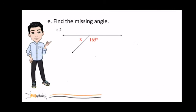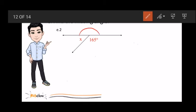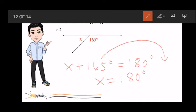So, in this problem, we need to find the missing angle x. Here, we can assume that this is a straight angle. And a straight angle has 180 degrees. And we all know that these two adjacent angles now are supplementary. Now, since they are supplementary, we can say that x plus 165 degrees is equal to 180 degrees. Transposing this value to the other side of equation will give us x equals 180 degrees minus 165 degrees. Now, subtracting these two values will give us 15 degrees. So, x is equal to 15 degrees.